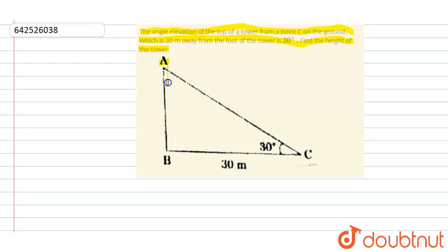In the diagram, we can see that it is a triangle ABC. Point C is 30 meters away from B and A has an elevation 30 degrees with respect to C.